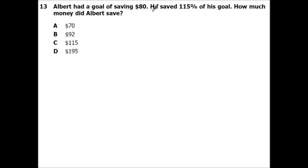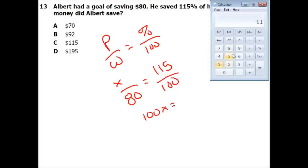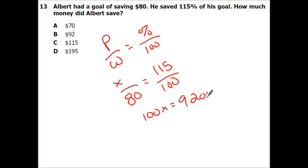Albert had a goal of saving $80. He saved 150% of his goal. How much money did Albert save? So all we're going to do with this is part over a whole equals percent over 100. So my part is what I don't know because my goal was 80. So that was my whole. 115 is my percent. So we're going to make this an x. So we're going to 100x equals, we can do 115 times 80 equals 9,200. Divide by 100. So x equals 92. So he actually saved $92.